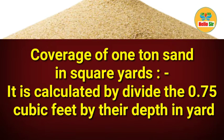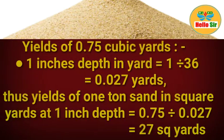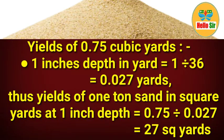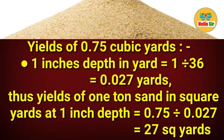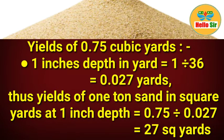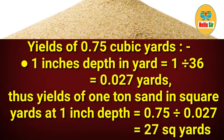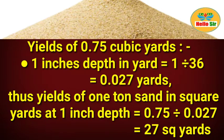Coverage of one ton of sand in square yards is calculated by dividing 0.75 cubic yards by the depth in yards. For a 1-inch depth, convert to yards: 1 divided by 36 equals 0.027 yards. Thus, the yield of one ton of sand in square yards at 1-inch depth equals 0.75 divided by 0.027, which comes out to approximately 27 square yards.